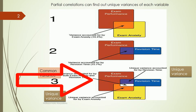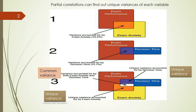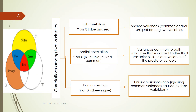There could be an instance where revision time and exam anxiety have overlapping variance or explanation. That overlapping of variance or explanation is what we call the common variance — it is the variance that is accounted for by both predictors. But there is also a unique variance offered by revision time, and a unique variance offered by exam anxiety.